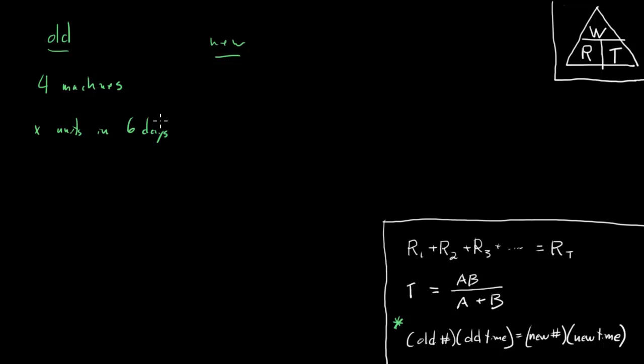Well what's our situation after the change? Well we're asked how many of these machines, so we don't know how many machines we're dealing with afterwards. How many of these machines can produce a total of three x units in four days? We've almost got the situation that we want. We've got a bunch of information from before and a bunch of information for afters. We can almost plug in here.